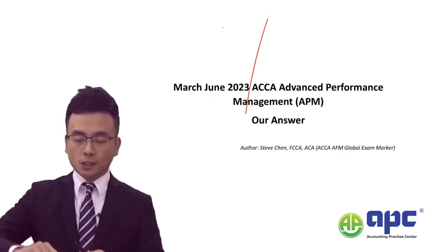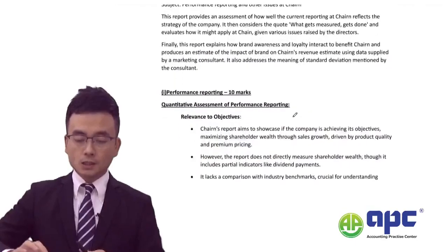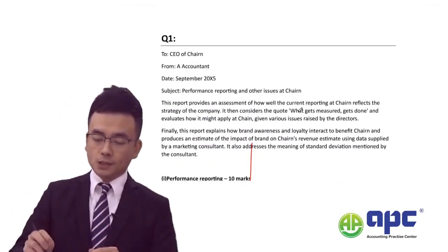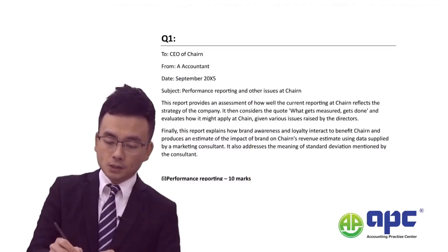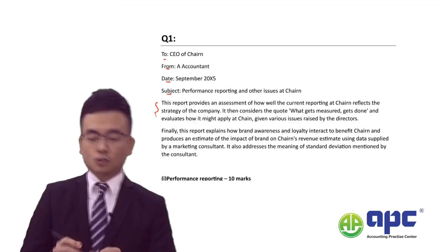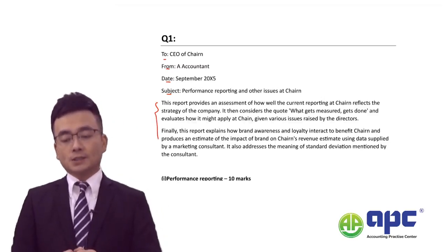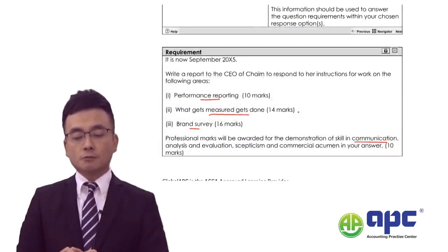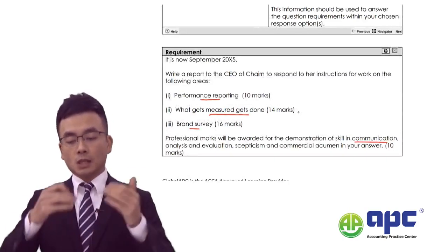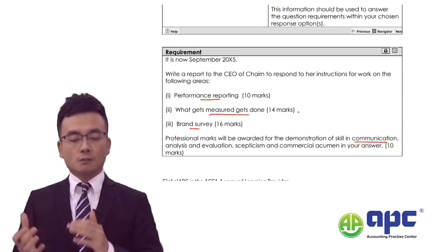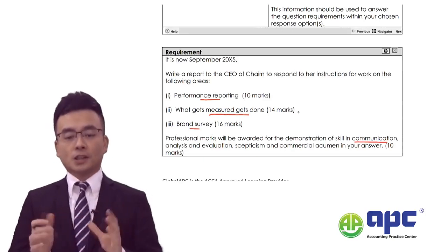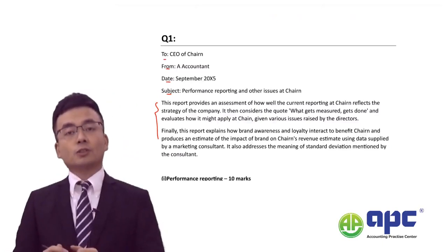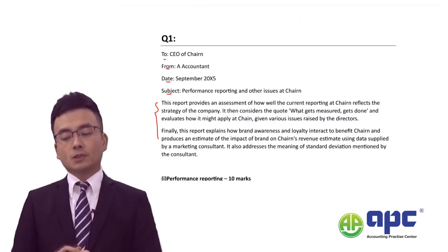In my answer you can see the report format: a heading, 'To', 'From', 'Subject', and introduction. I would say in the introduction that this report will assess performance reporting, copying the requirements from the question, then followed by 'what gets measured gets done', and finally the brand survey. Make sure your introduction covers all three requirements using a single paragraph.